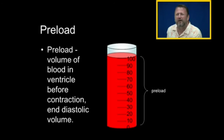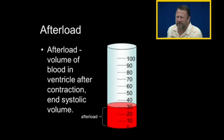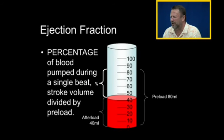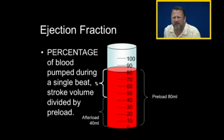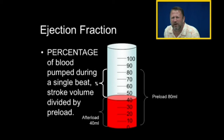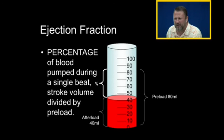So the preload is 100 milliliters, and after pumping a stroke volume of 70 milliliters, we're left with our afterload: 30 milliliters. That's where these terms come from. The ejection fraction is the percentage of blood pumped during a single beat. For example, if the preload is 80 milliliters and we pump out 40 milliliters, we're left with 40 milliliters — we've pumped half the volume of the ventricle.